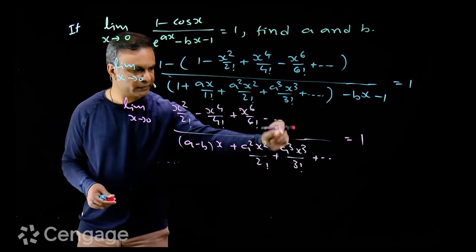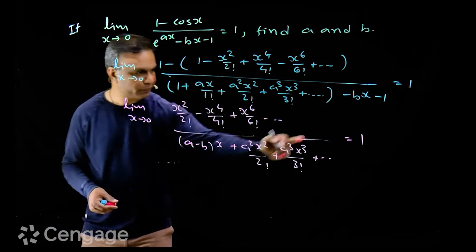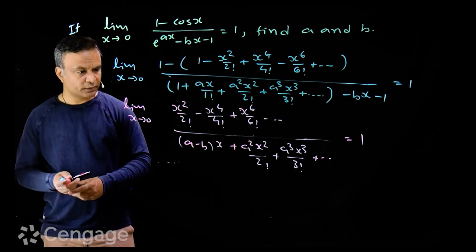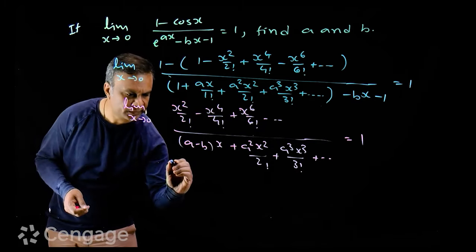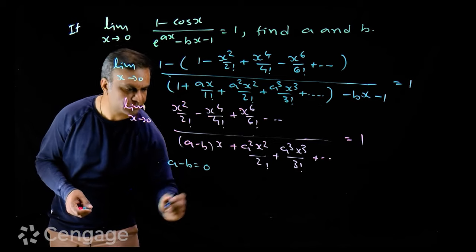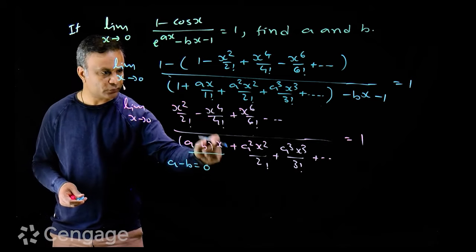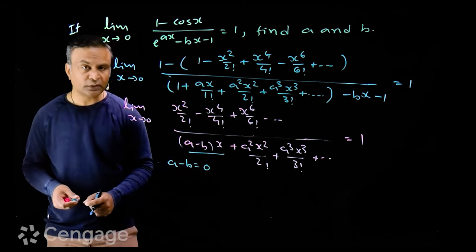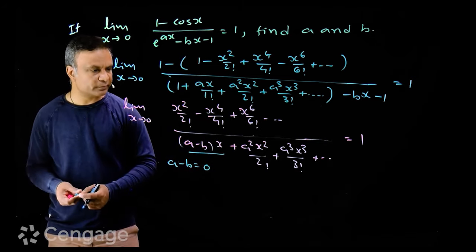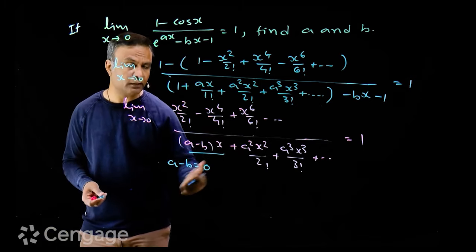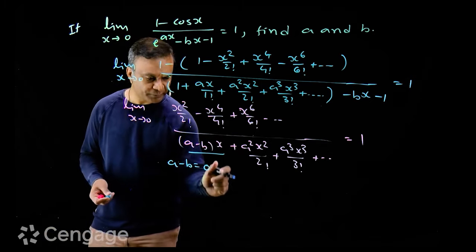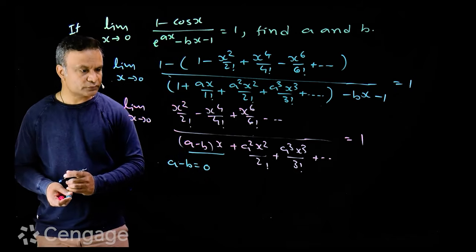Okay, now when this limit is finite non-zero, the limiting value is 1 which is a finite non-zero number. This is possible only if a minus b is equal to 0. This term definitely should not be there. When this term is not there, then x² will cancel from numerator and denominator. Then the limiting value we get will be finite.